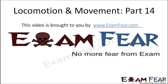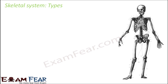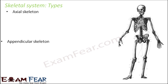Hello friends, this video on locomotion and movement part 14 is brought to you by examfear.com — no more fear from exam. So now we will talk about the types of the skeleton system. The skeleton system is broadly divided into two types: axial skeleton and appendicular skeleton.